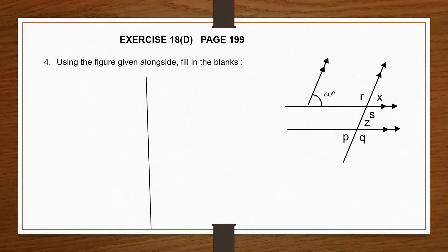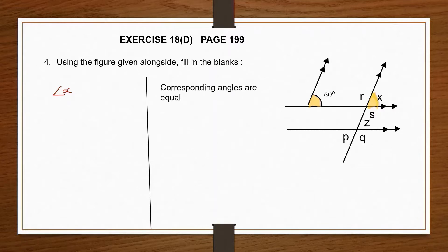Question 4: using the figure given alongside, fill in the blanks. We've been asked to find some angles, and the first one is angle X. Looking at the figure, angle X and the given 60 degrees are corresponding angles. Corresponding angles are equal, therefore angle X is equal to 60 degrees.